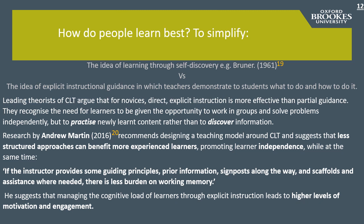The question of how people learn best has long been debated. One school holds that all people learn best when allowed to discover information for themselves — for example, Bruner 1961. On the other are those who believe in explicit instructional guidance, in which teachers demonstrate to students what to do and how to do it. Leading theorists of CLT argue that for novices, direct explicit instruction is more effective than partial guidance. They recognise the need for learners to work in groups and solve problems independently, but to practice newly learnt content rather than to discover information. Research by Andrew Martin (2016) recommends designing a teaching model around CLT, and suggests that less structured approaches can benefit more experienced learners, promoting learner independence, while if the instructor provides guiding principles, prior information, signposts and scaffolds when needed, there is less burden on working memory.